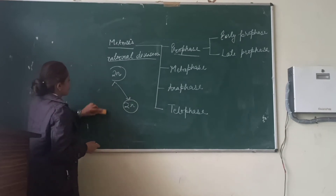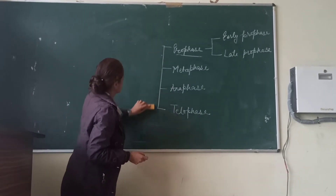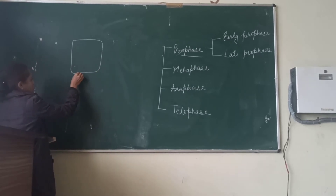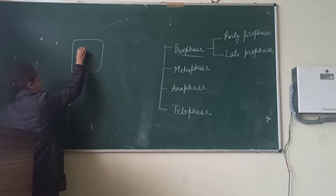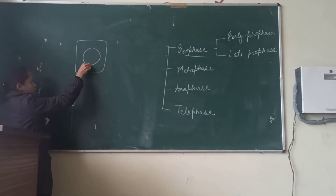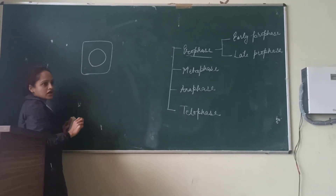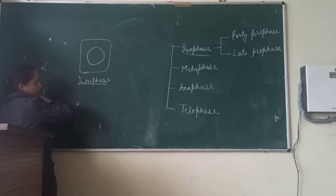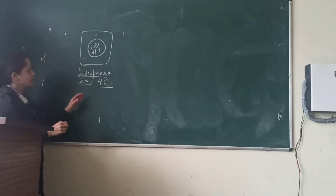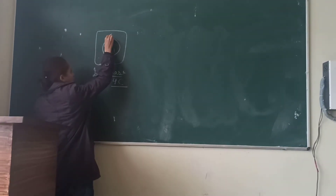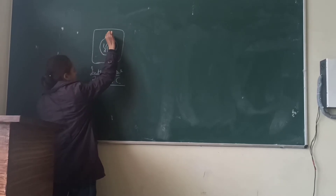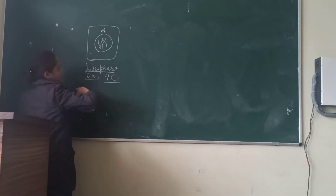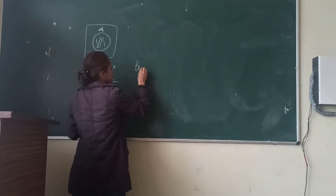We are taking the example of an animal cell. First, we have a cell which comes after interphase to undergo mitotic division. During interphase, all the preparation that is required for mitosis takes place. Since we are taking an example of an animal cell, we show the presence of centrioles here, which are already duplicated.